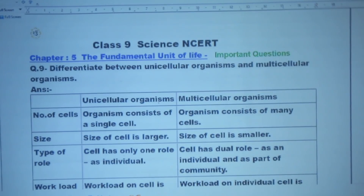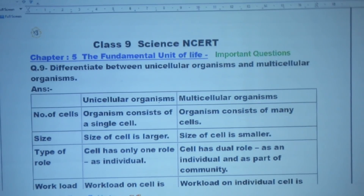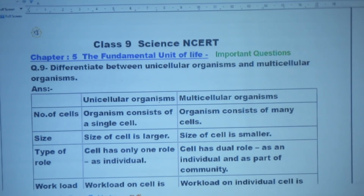Unicellular organism — number of cells: a unicellular organism consists of a single cell, but a multicellular organism consists of many cells. Size: in a unicellular organism the size of the cell is larger, but in a multicellular organism the size of the cell is smaller.